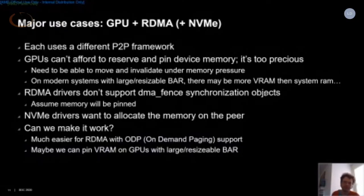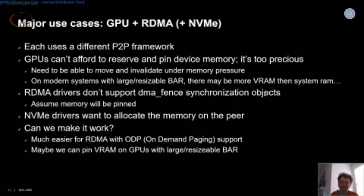Can we make it all work together? We traditionally don't want to pin VRAM, but on systems with a lot of GPUs you may actually have more VRAM than system memory — so is it really the scarce resource it has traditionally been? Food for thought: maybe we can pin VRAM to support pipelines involving RDMA NICs or NVMe devices, and maybe RDMA controllers with on-demand paging support could support DMA-BUF and deal with memory not being pinned all the time.